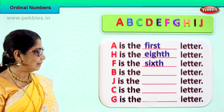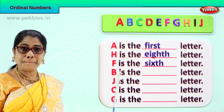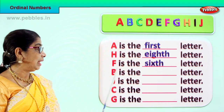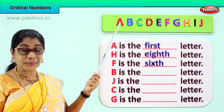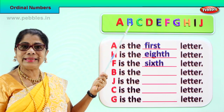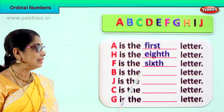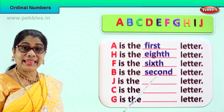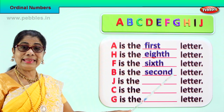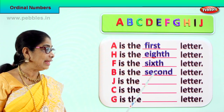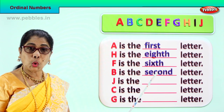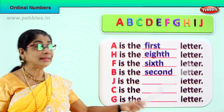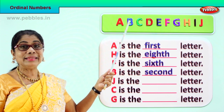Now let's look at the next letter — letter B. B is what letter? What is the ordinal place for letter B? A is first, so B is second. B is the second letter. Spell second: S, E, C, O, N, D — second. B is the second letter.